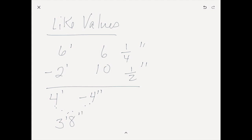Then they come over to the fractional amount: one-fourth, and I need to subtract one-half. They should be fluent with the idea that a half is the same as two-fourths. So if I have one-fourth and need to take away two-fourths, I could take away one-fourth, but I still have to take away another fourth. They can come over and do that from the three feet, eight inches, and get their answer of three feet, seven and three-fourths inches.